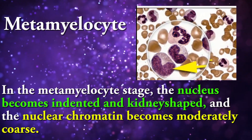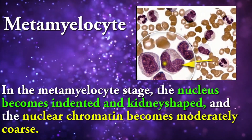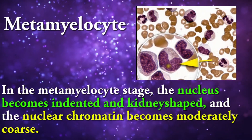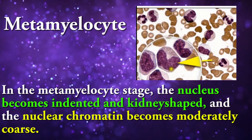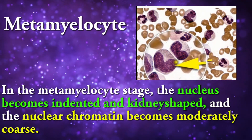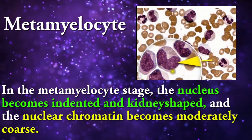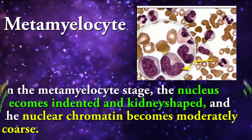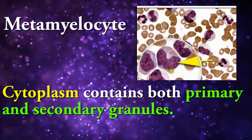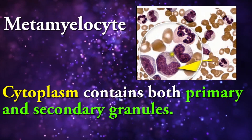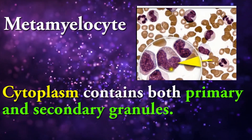In the metamyelocyte stage, the nucleus becomes indented and kidney-shaped, and the nuclear chromatin becomes moderately coarse. Cytoplasm contains both primary and secondary granules.